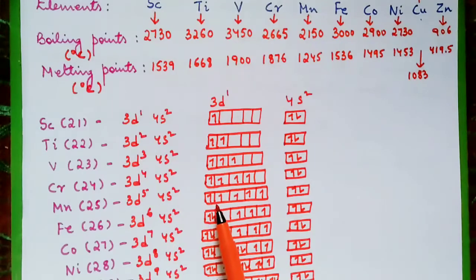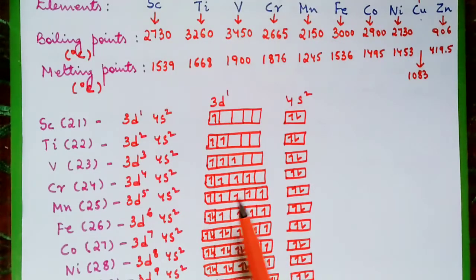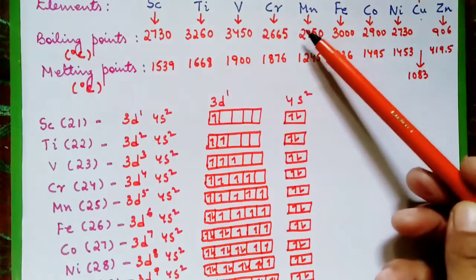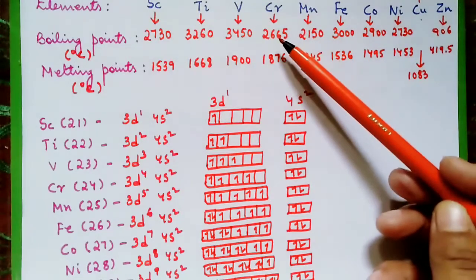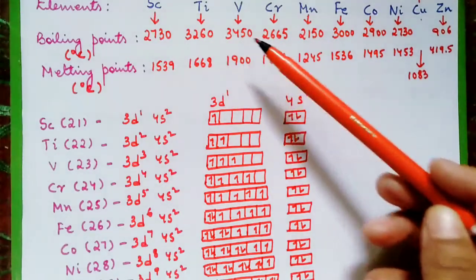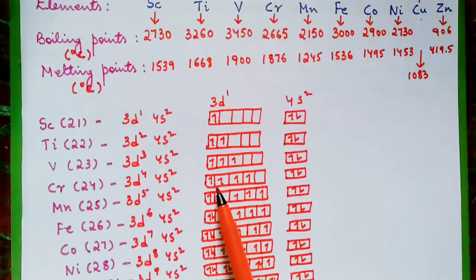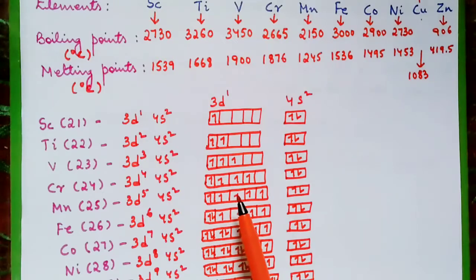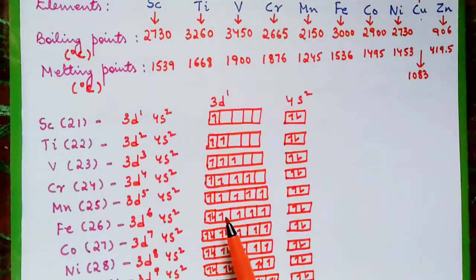For manganese, we have 5 unpaired electrons, but the boiling point is low compared to chromium. Why? Because this is the half-filled stability state — having 5 electrons in the d-orbitals means it's in the half-filled stability state.